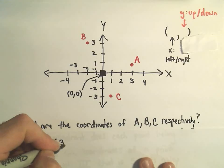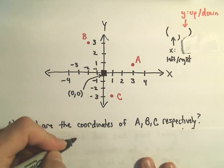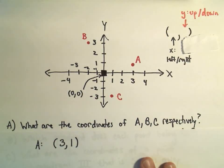That's the value of the x-coordinate. And then from there, it looks like I move one unit upwards to get to that point. So point A has coordinates 3, 1.